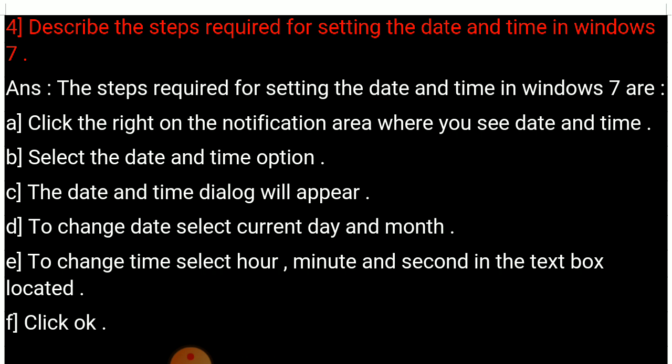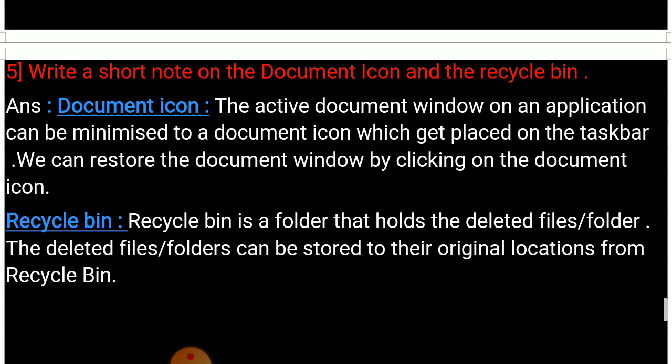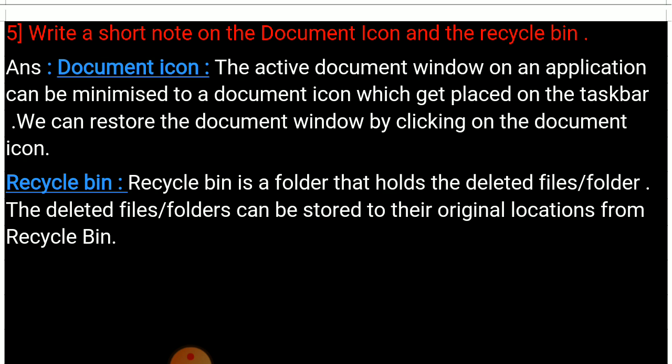This way you can change the date and time of your computer. Question number 5: Write a short note on the document icon and the recycle bin. There are many icons on the desktop but in this question we discuss only two. First, document icon: the active document window on an application can be minimized to a document icon which gets placed on the taskbar. We can restore the document window by clicking on the document icon. Second, recycle bin: the recycle bin is a folder that holds deleted files and folders. The deleted files and folders can be restored to their original locations from the recycle bin.